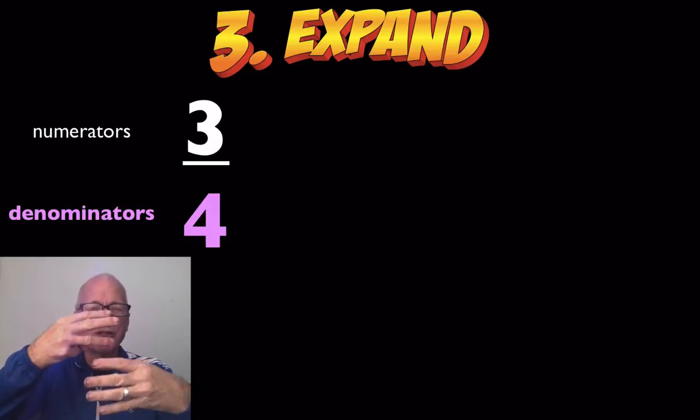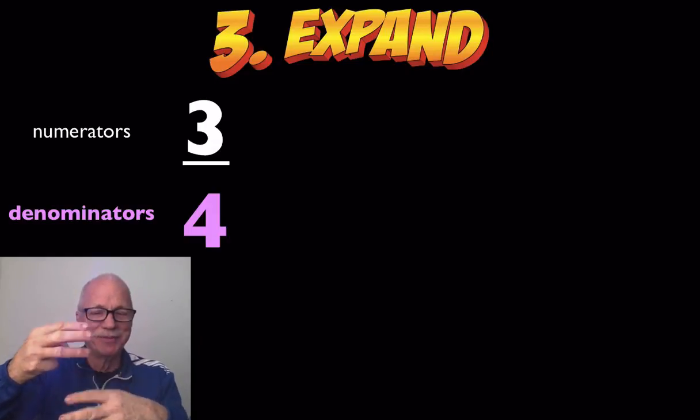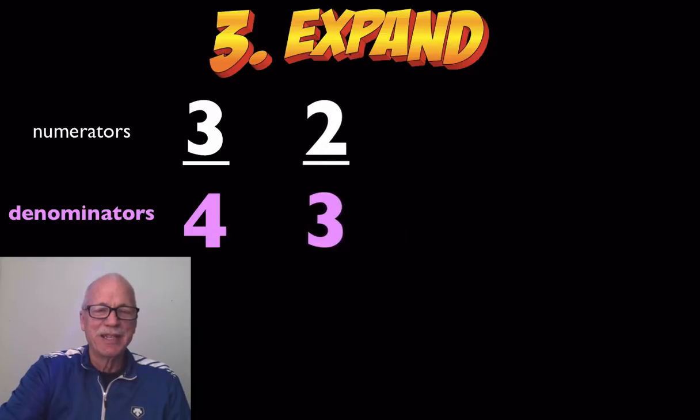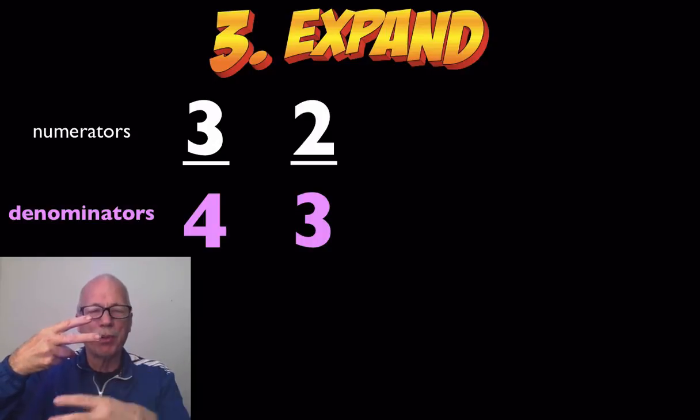It's going to show all the parts in the whole. There's a numerator, three. Here's another fraction, two over three. Three is the denominator showing all the parts in the whole.